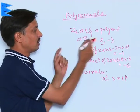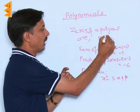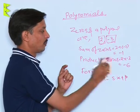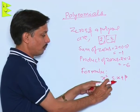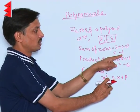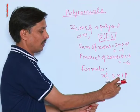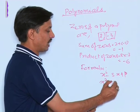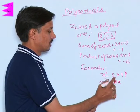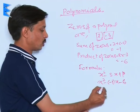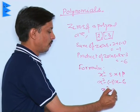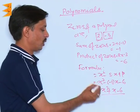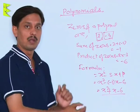In this case where the zeros are 2 and minus 3, their sum becomes minus 1, their product becomes minus 6. In place of s we will replace minus 1, in place of p we will replace minus 6. So, answer will come x square minus of minus 1 into x plus minus 6. So, this will be x square plus x minus 6 is that quadratic polynomial whose zeros are 2 and minus 3.